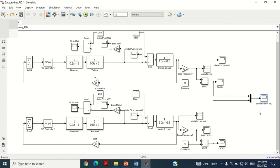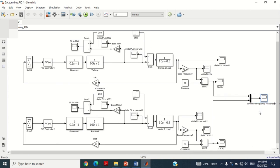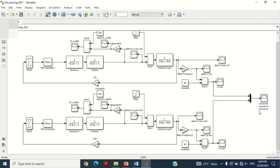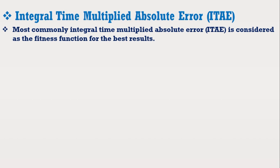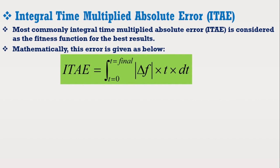The algorithm needs a fitness function to optimize the parameters of the PID controller. The fitness function in this model is considered as the error of the system. Most commonly, integral time multiplied absolute error (ITAE) is considered as the fitness function for the best results. Mathematically, this error is given as the integral of the absolute error of change in frequency multiplied with time, integrated from 0 to the final value of time. Now suppose if we run this simulation for 10 seconds, then the time will be from 0 to 10 seconds.